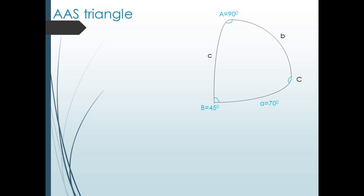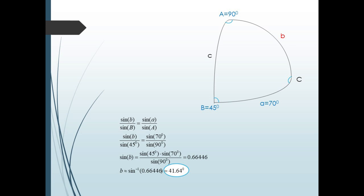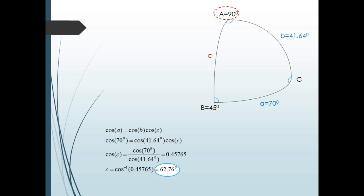Consider this angle-angle-side case. Because we have an angle and its opposite side — little a and big A — we can find the ratio needed for the law of sines. We can use angle B = 45 degrees to find side b. Plugging in: sin b / sin 45 = sin 70 / sin 90. This gives sin b ≈ 0.66446, so b = arcsin(0.66446) ≈ 41.64 degrees. Now since angle A is 90 degrees, we can use the spherical Pythagorean theorem: cos a = cos b · cos c. Hence, cos 70 = cos 41.64 · cos c, so cos c ≈ 0.45765, and c = arccos(0.45765) ≈ 62.76 degrees.